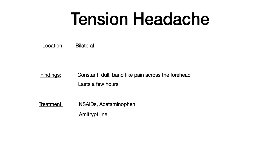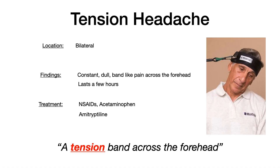For USMLE and COMLEX, the key for tension headaches is knowing its location because it's the only bilateral headache. Think of a tension band across the forehead — that helps you remember this is a bilateral headache running across the forehead. Tension headaches are your general everyday headaches: that dull, constant, band-like pain across the forehead. Just remember a tension band across the forehead to recall that this is bilateral.